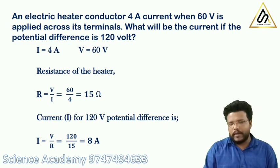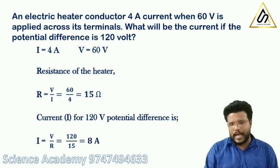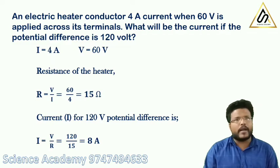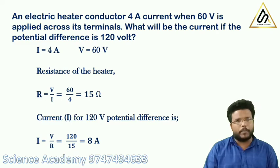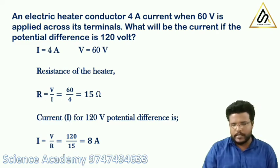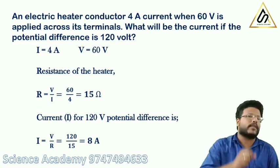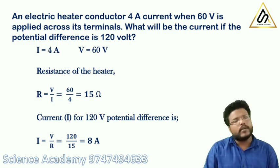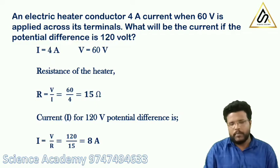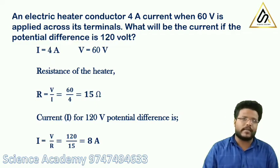The electric heater is connected to a 60V potential difference and draws 4A current. Using Ohm's law, R equals V by I. V is 60V and I is 4A, so R equals 60 divided by 4, which equals 15 ohm. That is the resistance of the heater.